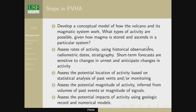We have to assess rates of activity if we're going to understand probability. That might be based on historic observations or radiometric age determinations, or in short-term forecasts on unrest and observations. We have to forecast the potential location of activity, magnitude, and ultimately potential impacts. I might use the geologic record for impacts, as in that Iceland map, or numerical models, as in Vesuvius.